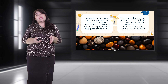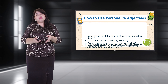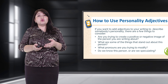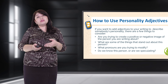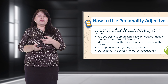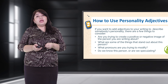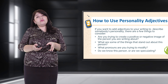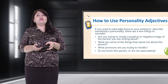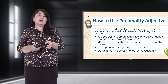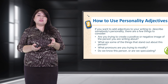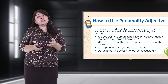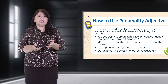If you want to add adjectives to describe somebody's personality, there are a few things to consider. Are you trying to create a positive or negative image of the person you are writing about? What are some of the things that stand out about this person? What pronouns are you trying to modify? Do we know this person, or are we speculating?